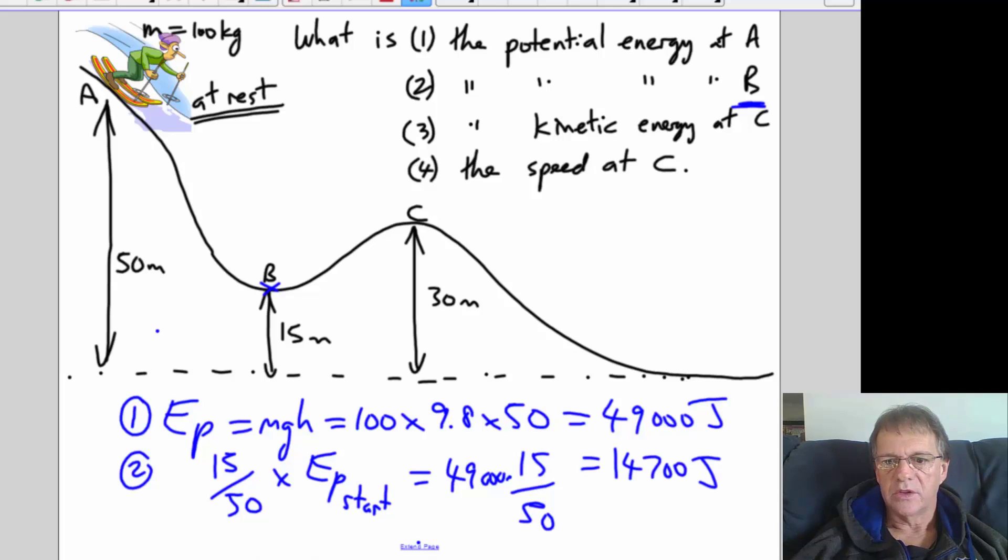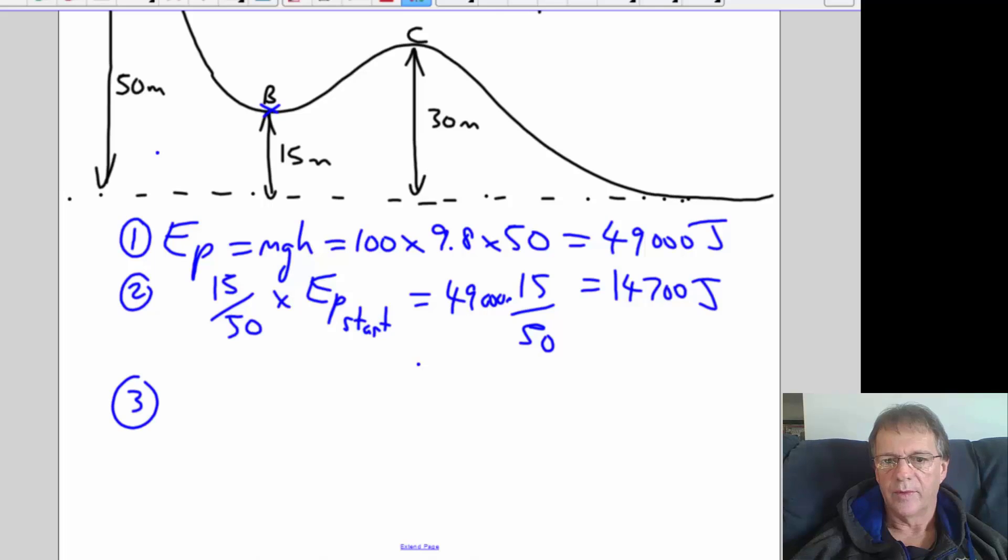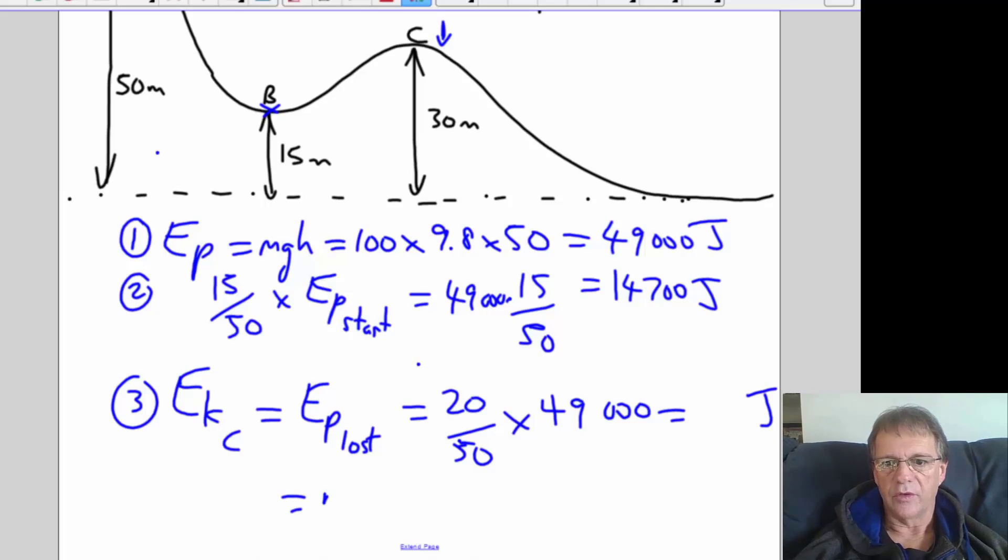If we look at the kinetic energy at C, by the way that value is 14,700 joules, the potential energy at B. So the kinetic energy at C is going to be how much has fallen through, so it's going to fall through 20 meters, which means that's how much is going to be lost and converted into kinetic energy. So it's 20 meters out of 50 that's going to convert through, so you're basically two-fifths of the original value of that 49,000 joules. That'll tell you the kinetic energy that's been gained between positions A and C, and you can use that later on to work out the speed rather than using the equations of motion.